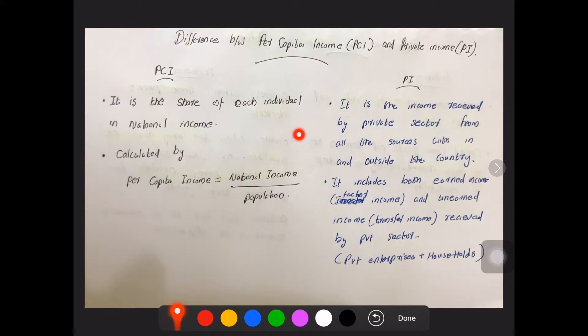So the difference is: per capita income means the individual share, while private income means the income received by the private sector.